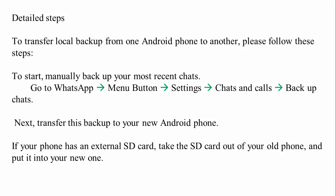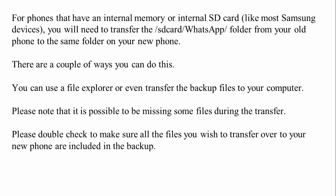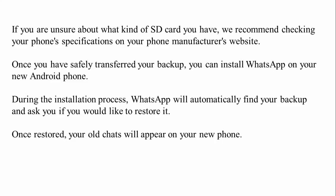Here are the detailed steps to transfer a local backup from one Android phone to another. Go to WhatsApp, tap the menu button on the right side of the top menu, go to Settings, then Chats, then Chat Backup. Next, transfer this backup to your new phone. If your phone has an external SD card, take the SD card out and put it into the new phone. If your phone uses internal memory, like most Samsung devices, you will need to transfer the WhatsApp folder from your old phone to the same folder on the new phone. You can use a file explorer or transfer the backup files to your computer. Please note that some files may be missing during transfer, so double-check that all files are included. If you are unsure about what kind of SD card you have, check your phone's specifications on the manufacturer's website.